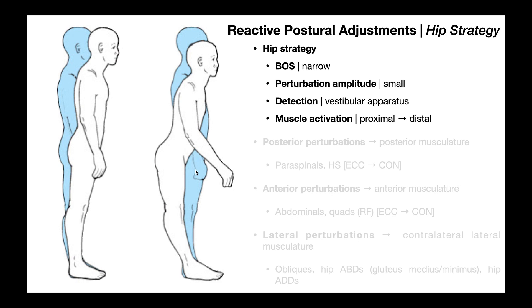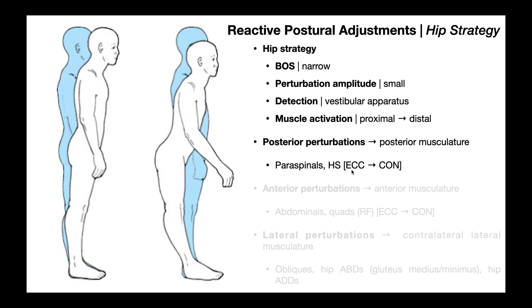The hip strategy shown here in the diagram is from a posterior directed perturbation, and that would cause the center of gravity of the person — particularly around the hips — to shift posteriorly. That's going to cause the person to need to activate their posterior musculature. The two most important muscle groups are the paraspinals and the hamstrings, and they activate proximal to distal, so the paraspinals activate first and then the hamstrings. They both activate first eccentrically to control that shift of center of gravity — slowing it down to zero so it doesn't just keep going and cause a fall.